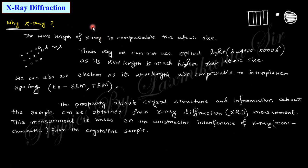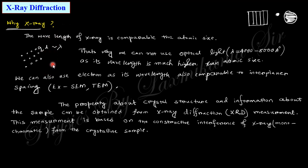Let us start with XRD. First, we need to know why we use X-ray instead of UV light or optical visible light. Because the wavelength of X-ray is comparable with the atomic size. The wavelength of X-ray is nearly 10 Angstroms and the atomic size is also nearly 10 Angstroms. When the wavelength of the X-ray and the crystal plane spacing — the interplanar spacing — are comparable, then we obtain actual information. But in the case of UV or visible light, the wavelength is much higher and cannot give depth information.